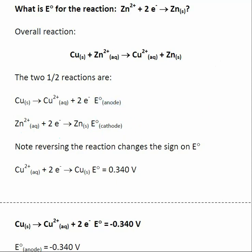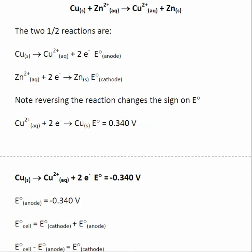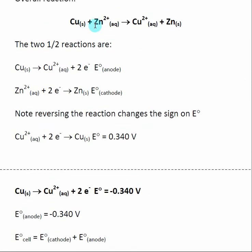The information given in the original question is a reduction half reaction, and that does not fit the reaction we are using here — we actually want the exact reverse of that. This is one of the first pitfalls: information is very commonly given as reduction potentials. Any E naught values given as a starting point are typically given as a reduction half potential, and it's up to you to recognize that you need to reverse it.